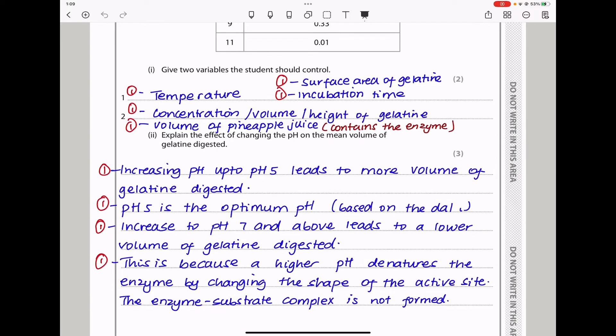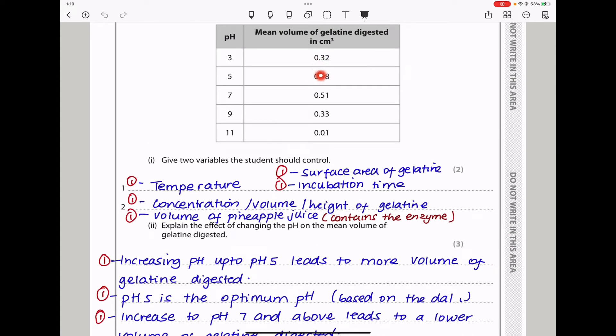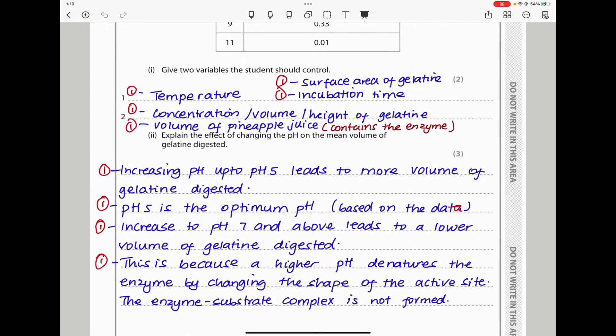The next part says explain the effect of changing pH on the mean volume of gelatin digested. Moving from here to here, there is an increase. While as you increase the pH, there is a decrease. I said increasing pH up to pH 5 leads to more volume of gelatin digested. pH 5 is the optimum pH based on the data. If you increase to pH 7 and above, that led to a lower volume of gelatin being digested.